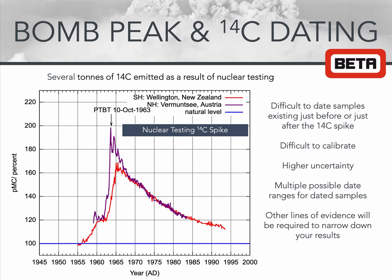This peak makes differentiating samples that were living just before or just after the peak quite challenging, as the same radiocarbon signature could lead to multiple different dates. Generally, wiggles in the radiocarbon curve can influence how easily it is to calibrate your samples to calendar years, and there are areas of high uncertainty and areas of low uncertainty within this curve. As a result, samples that existed around the time of this 14C peak are difficult to calibrate and often provide higher uncertainty dates than samples from more stable parts of the calibration curve.